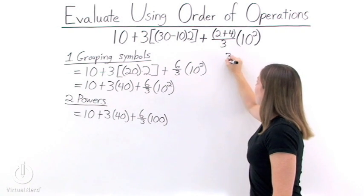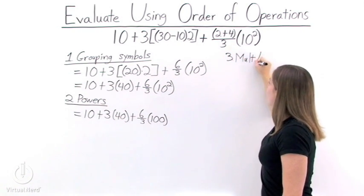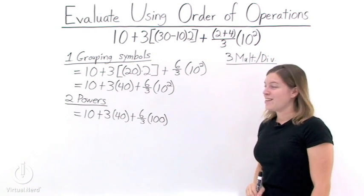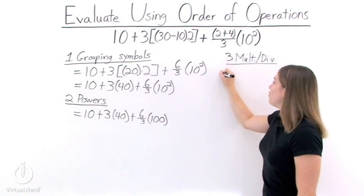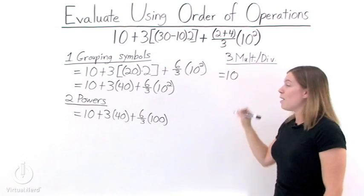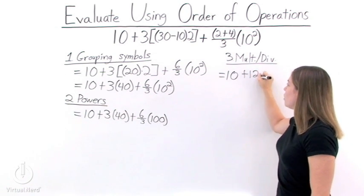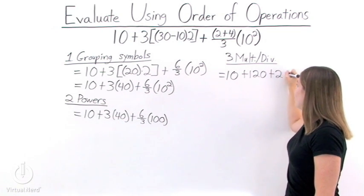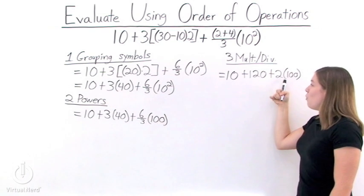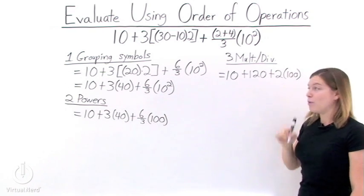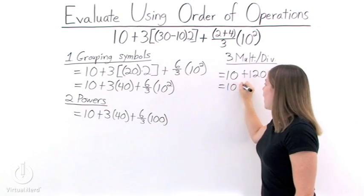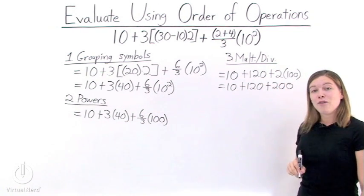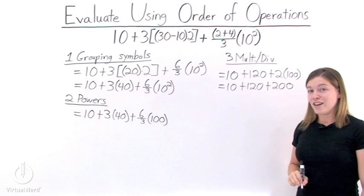The third step in the order of operations is to multiply and divide from left to right. 10 is all by itself, so we just rewrite it. Then we take 3 times 40, which is 120. Then 6 divided by 3 is 2, and we rewrite 100. Now we need to multiply together 2 and 100, so we have 10 plus 120 plus 200. Now we've eliminated all of our multiplications and divisions.